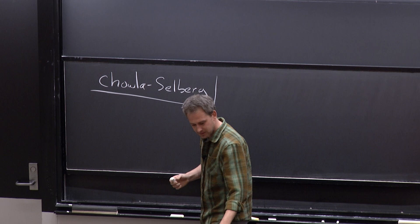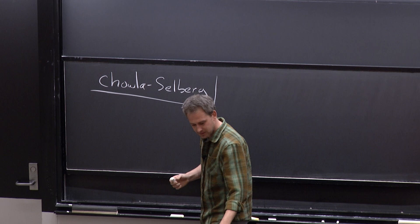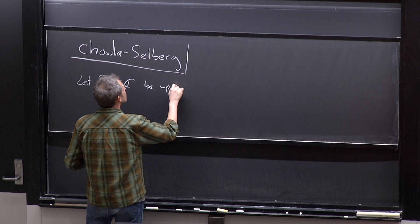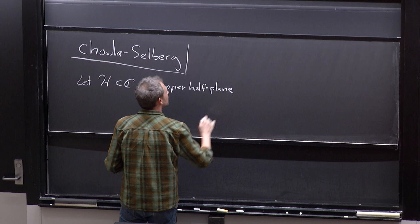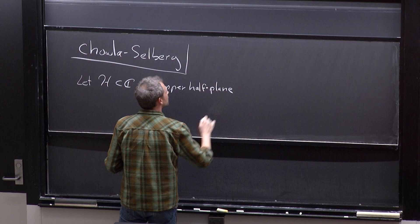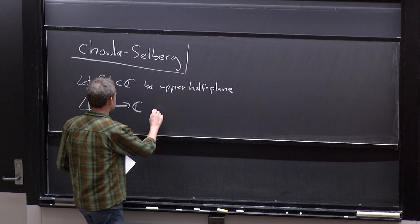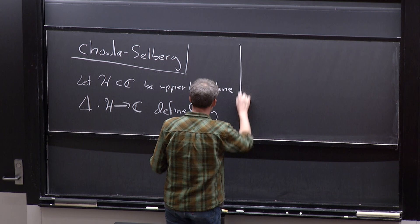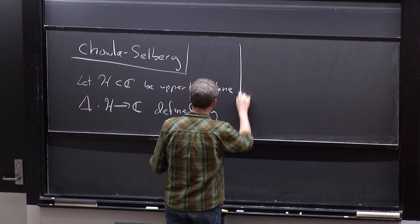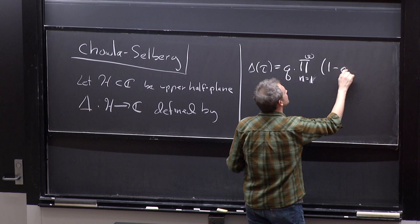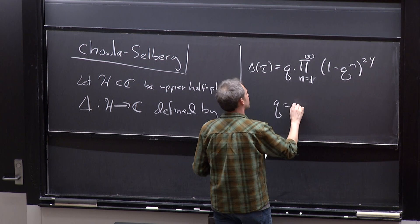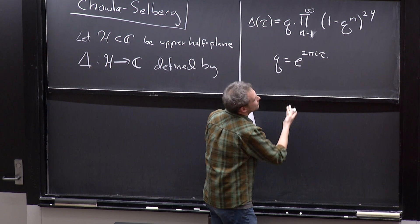I want to state it in two different ways. The first formulation is maybe the original and much easier to give. So H is going to be the complex upper half plane, and everybody's favorite function on the upper half plane already appeared in Frank Caligari's talk. It's Ramanujan's modular discriminant. Delta is the holomorphic function on the upper half plane defined by delta of tau equals q times the product for n from 1 to infinity of (1 minus q to the n) to the 24th power, where q is e to the 2 pi i tau.